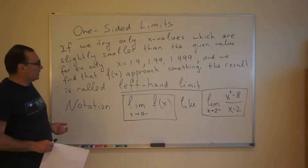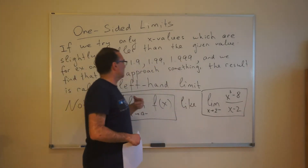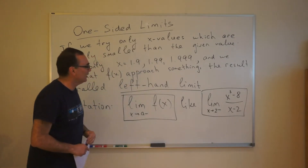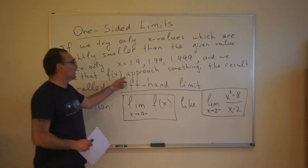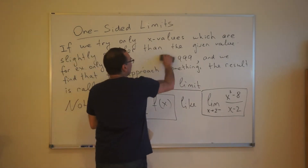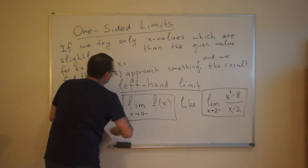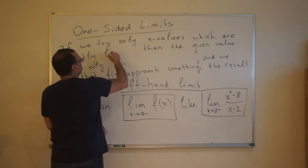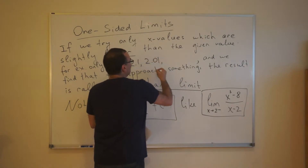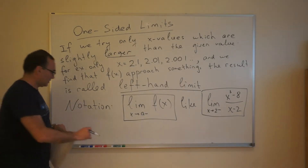On the other side, we may want to plug in only slightly larger values. Like in this case, if x approaches 2, instead of plugging in both larger and smaller, we plug in only larger values such as x equals 2.1, 2.01, 2.001, etc. And if we again find that f(x) approaches something, then the result is called the right-hand limit.